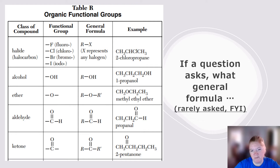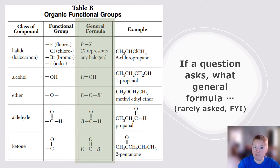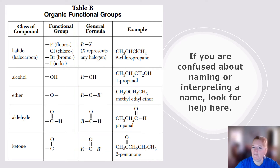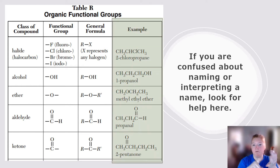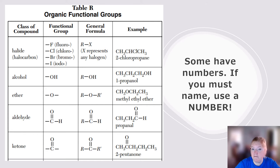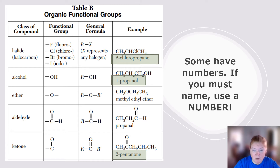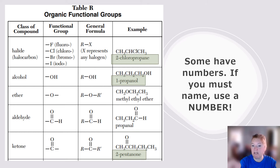If a question asks for the general formula — it's rarely asked — write it directly from the general formula column. If you're confused about naming or interpreting a name, look for help in the examples column. Some have numbers: if a compound needs an address, put an address. But some don't need one, usually because the functional group is on the end or an oxygen is breaking up the chain and we name each side separately.